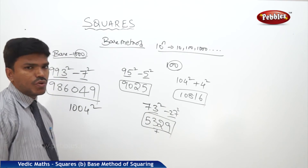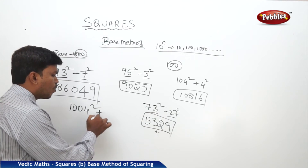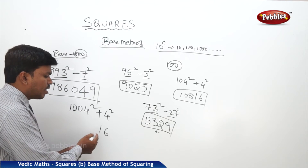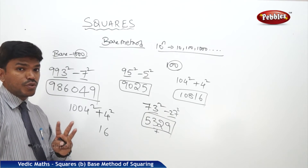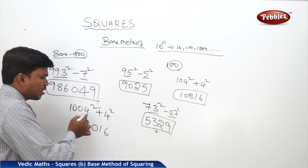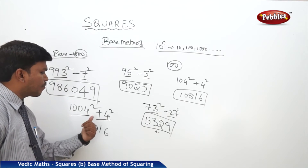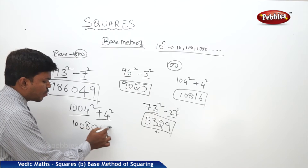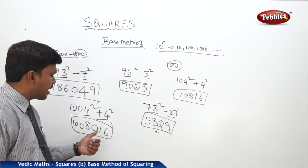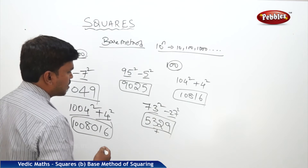One more example for base 1000: 1004 squared. Compare with base 1000 — it is more by 4. What is 4 squared? 16. But it should be 3 digits, so it is 016. Add both numbers on the left side: 1004 plus 4 is 1008. So your answer is 1008016.